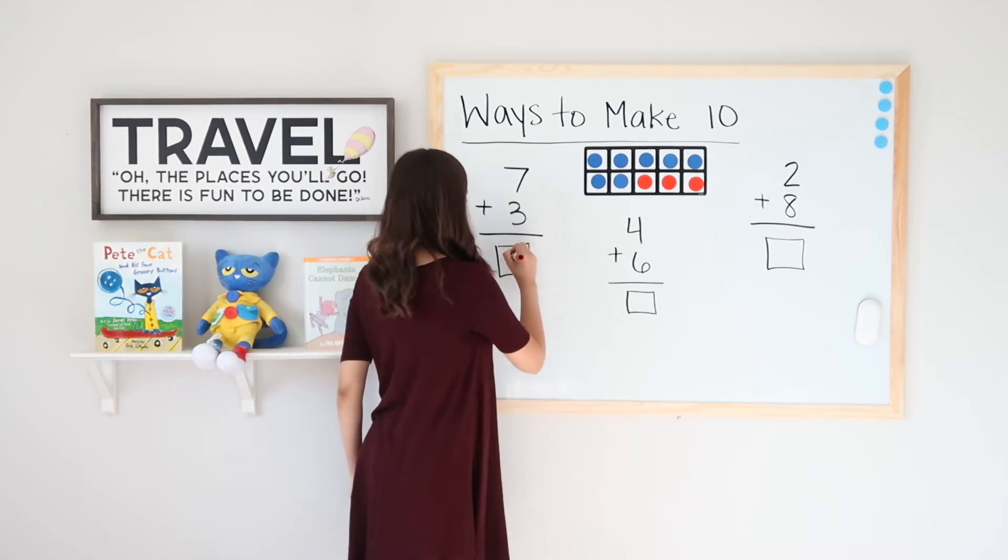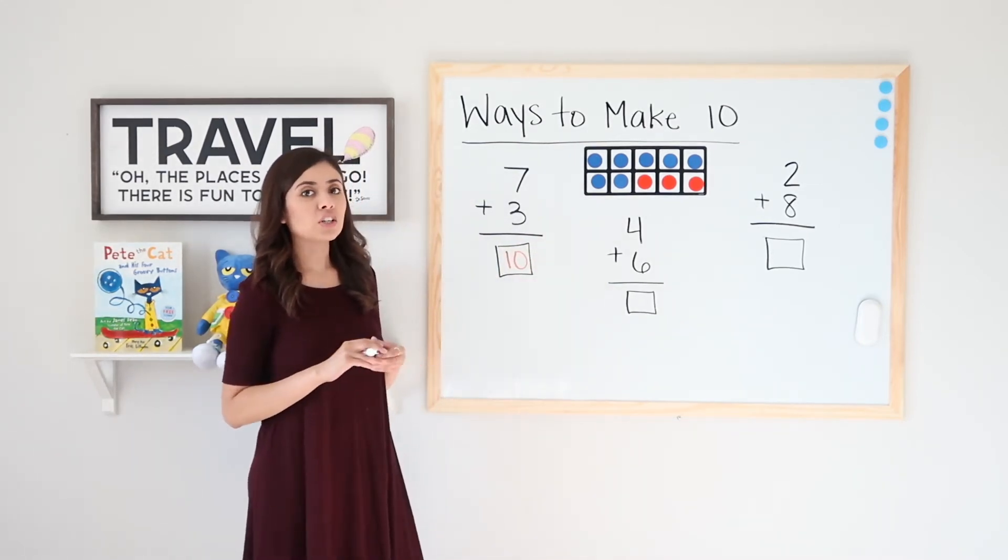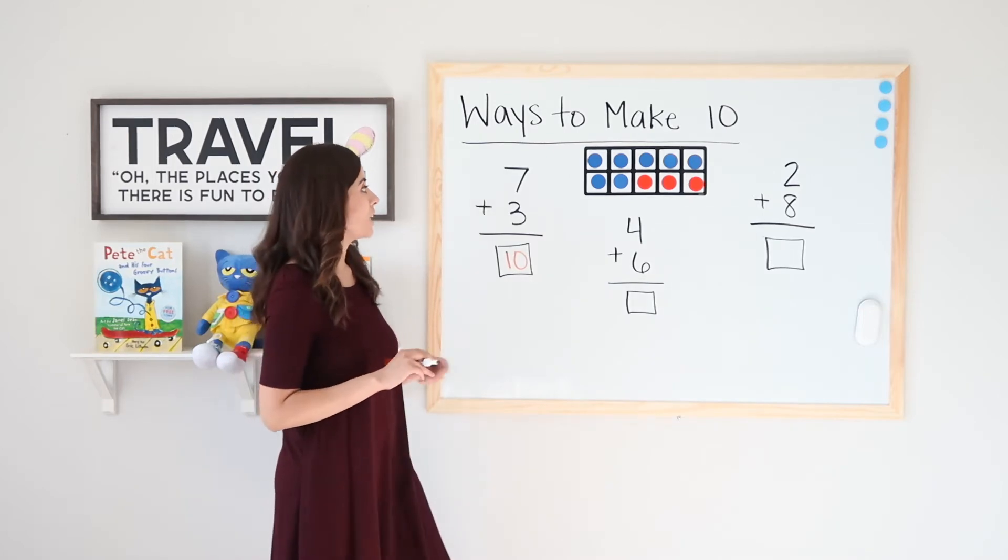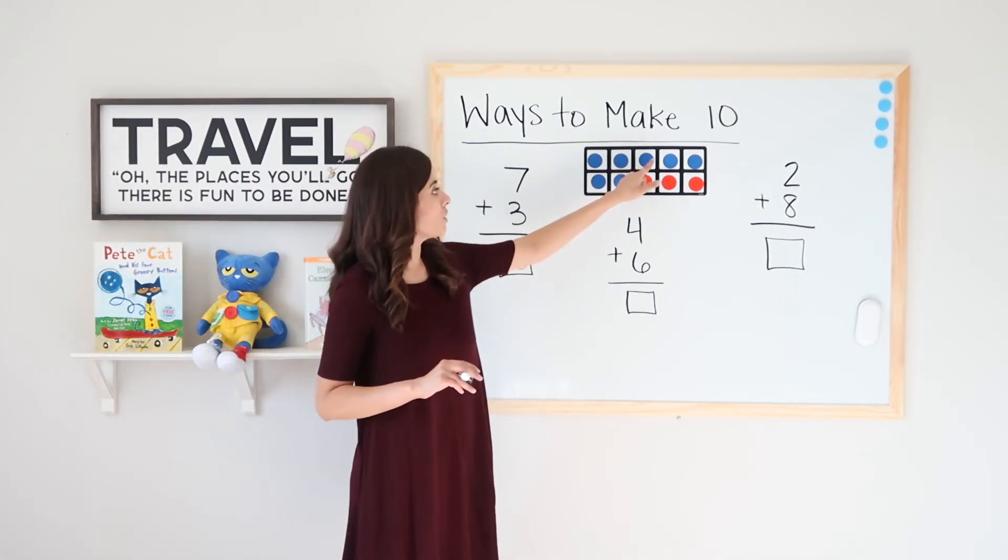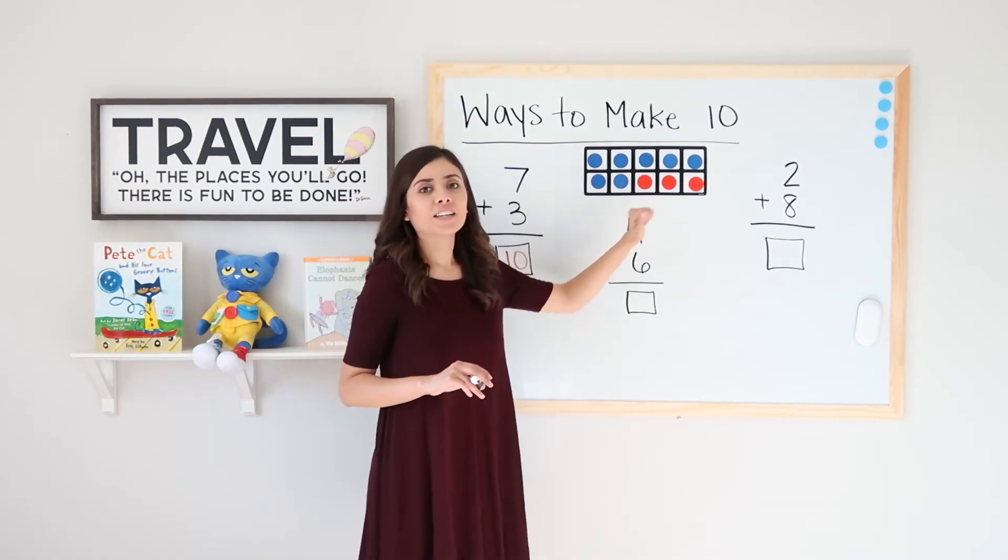I don't have to count. I already know that because I filled this all up, seven plus three equals ten. Very good. If you're not sure, you can count, but you will get ten. Watch. One, two, three, four, five, six, seven, eight, nine, ten. Very good.